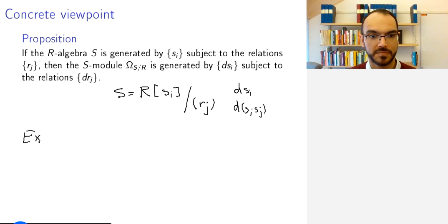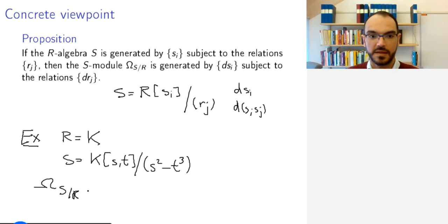If R is a field K and S is the algebra K[s,t] generated by s,t with the relation s² - t³ = 0, then Ω_{S/R} will be the module generated by ds and dt, these symbols.